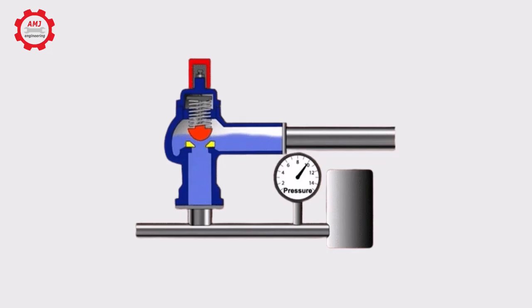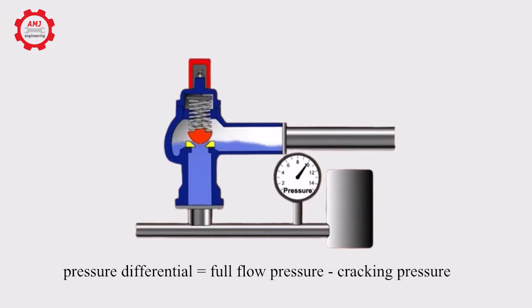When the valve is bypassing its full rated flow, it is in a state of full flow pressure. The difference between full flow and cracking pressure is sometimes known as pressure differential, also known as pressure override.